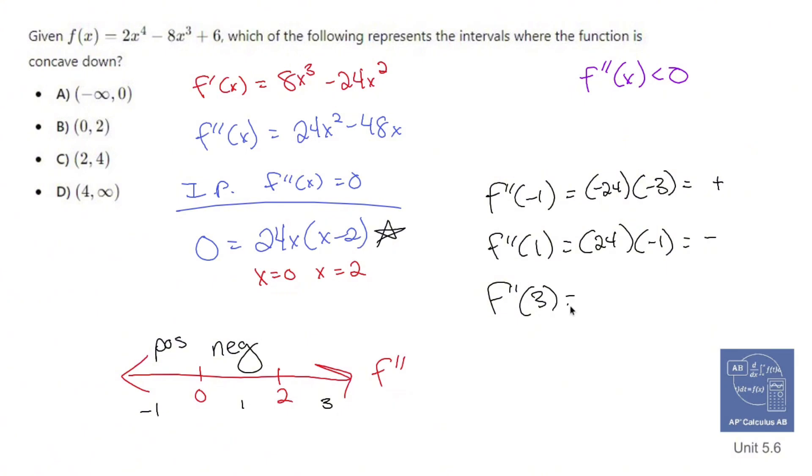f double prime of 3 is going to be 24 times 3, which is 72. And 3 minus 2 is 1. So that's going to become positive. So you're going to become positive.